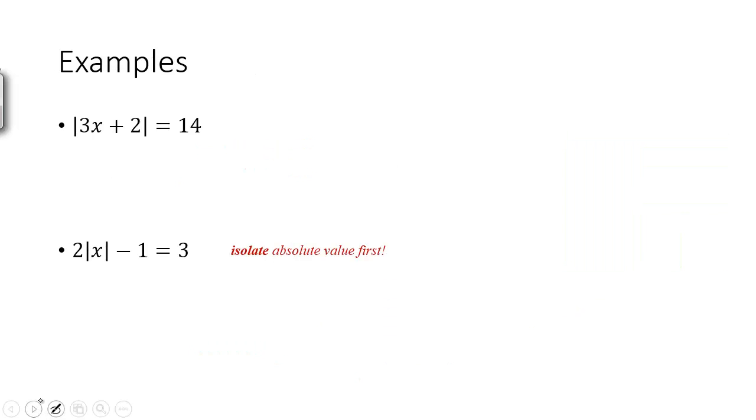So let's check it out. The first example here, the absolute value is all on its own. We have two cases, either 3x plus 2 is equal to 14, or 3x plus 2 is equal to negative 14. So you can go ahead and solve those, and you have two answers.